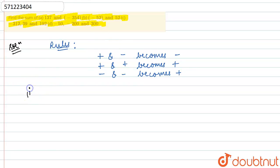So you need to remember this thing while solving all these parts. First part: we need to find the sum of 137 and minus 354. So this means 137 plus of minus 354. Now again, plus minus becomes minus.